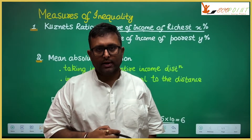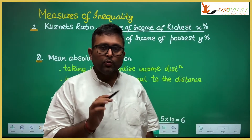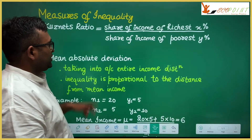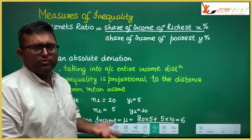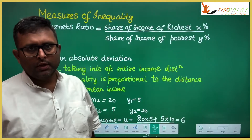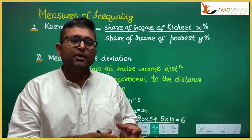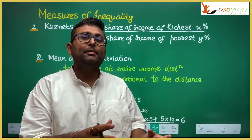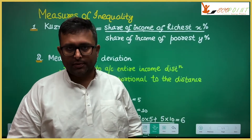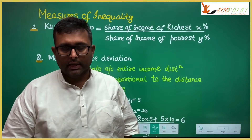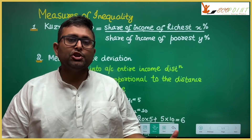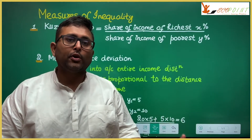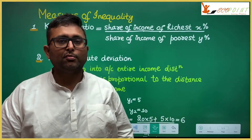Some more measures of inequality. One of the measures is the Kuznets ratio. What is the Kuznets ratio? You take the share of the richest 20% of the population and the share of the poorest 40% of the population.